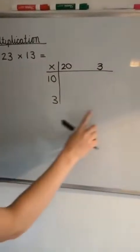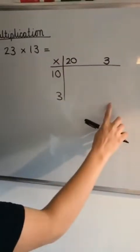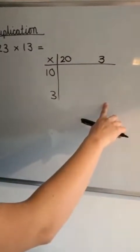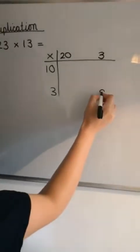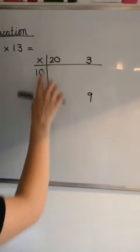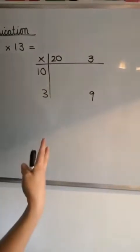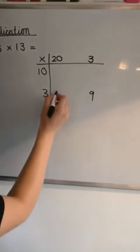We're going to start with this far corner by looking at 3 times 3. So let's count in 3s together: 3, 6, 9. Then we can move on to this column, which is 20 times 3. We can do 3 times 2, we know that's 6, so 3 times 20 is 60.